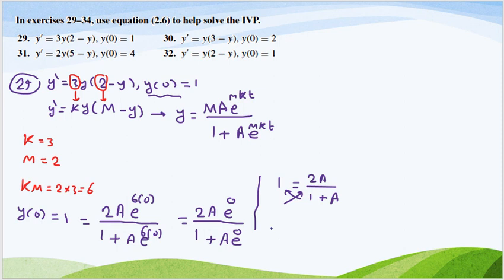We can multiply to get 1 plus A equals 2A. Moving terms to the other side, 1 equals 2A minus A, so A equals 1.